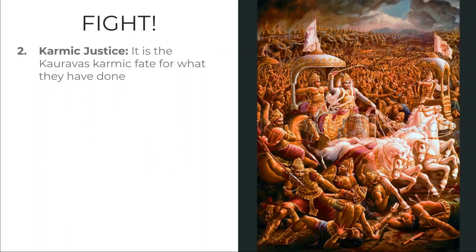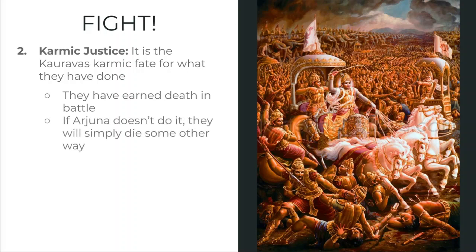Krishna also discusses with Arjuna the notion of karmic justice. The teaching about karma is brought down to how it affects people in a particular lifetime, a particular embodiment, a particular reincarnation. Krishna tells him: if these individuals die on the battlefield, if you kill them, then that was their fate — deserved as a result of the karma they have accumulated for what they have done. They have earned death in battle as a result of their own actions, which they engaged upon freely earlier in their life or in previous lives. If Arjuna does not fight, they will simply endure the consequences of their karma in some other way — by not killing them in this battle, you are not saving them from their karmic fate. They will simply die some other way.